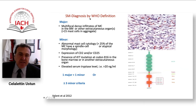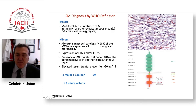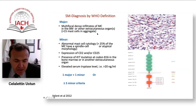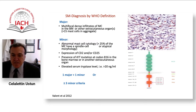How do we diagnose SM? The World Health Organization provides a very clear definition. There is one major criterion and four minor criteria. A patient needs one major plus one minor, or at least three minor criteria if there is no major. The major criterion is the presence of aggregates of mast cells, generally more than 15 mast cells in one aggregate, at an extra-cutaneous site. If it is only in the skin, then it is cutaneous mastocytosis.